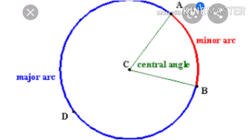If the length of an arc is less than the length of the semicircle, then it is known as a minor arc. If the length of an arc is more than the length of the semicircle, then it is known as a major arc.